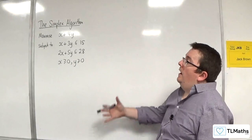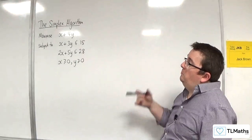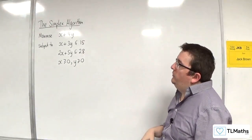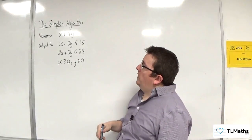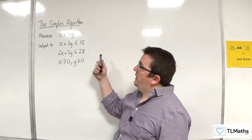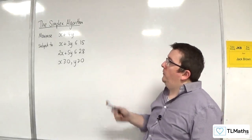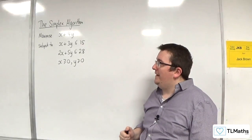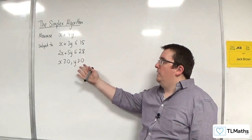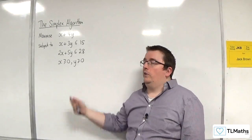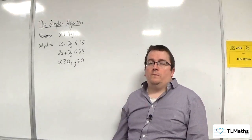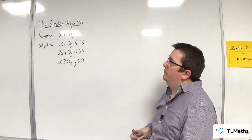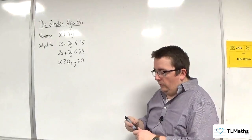In this example, we're going to maximise x plus 4y, subject to x plus 3y is less than or equal to 15, 2x plus 5y is less than or equal to 28, x greater than or equal to 0, y greater than or equal to 0, using the simplex algorithm.